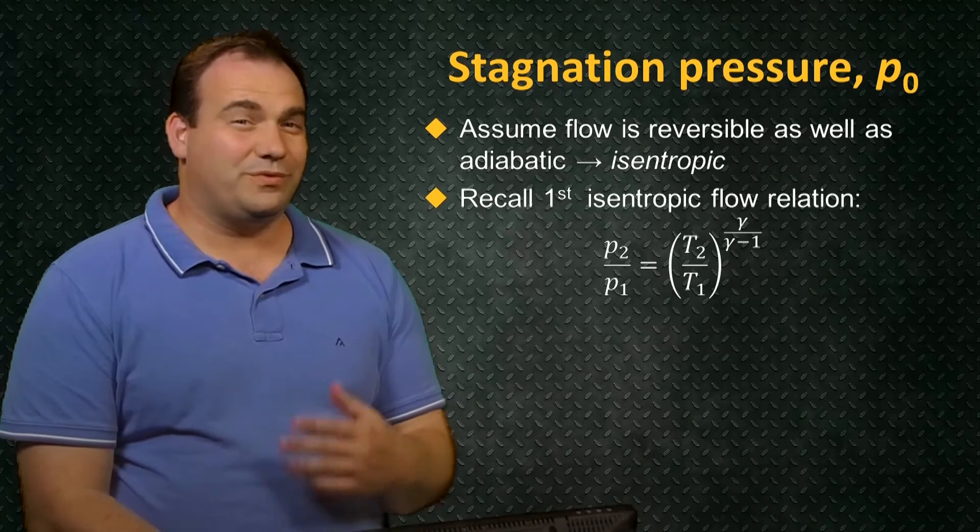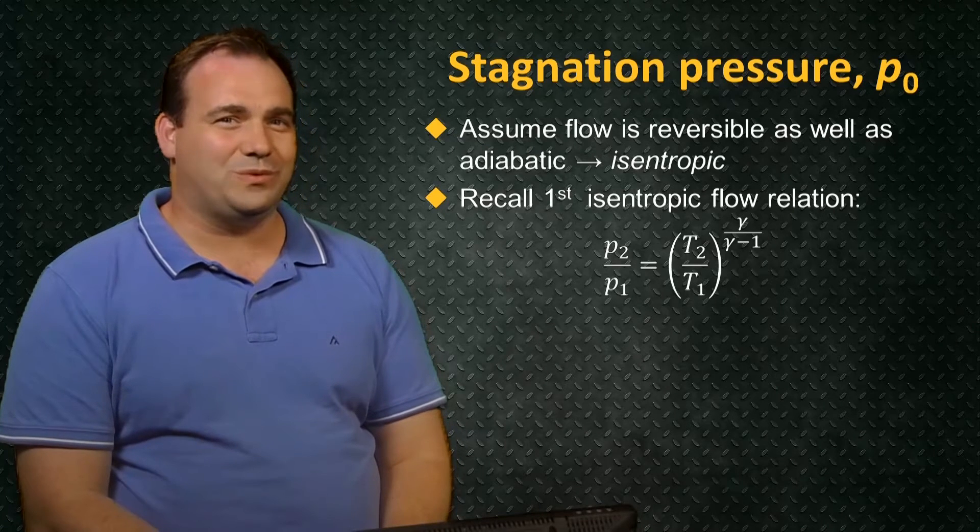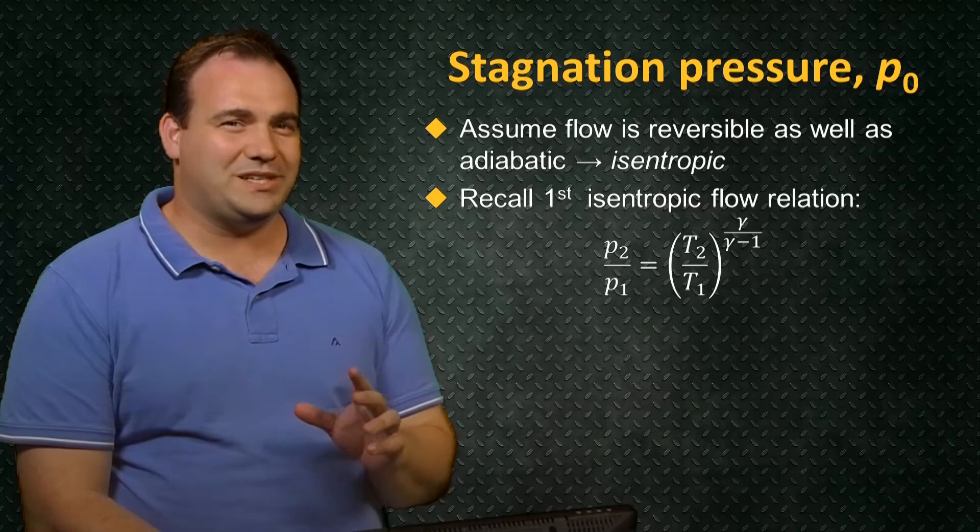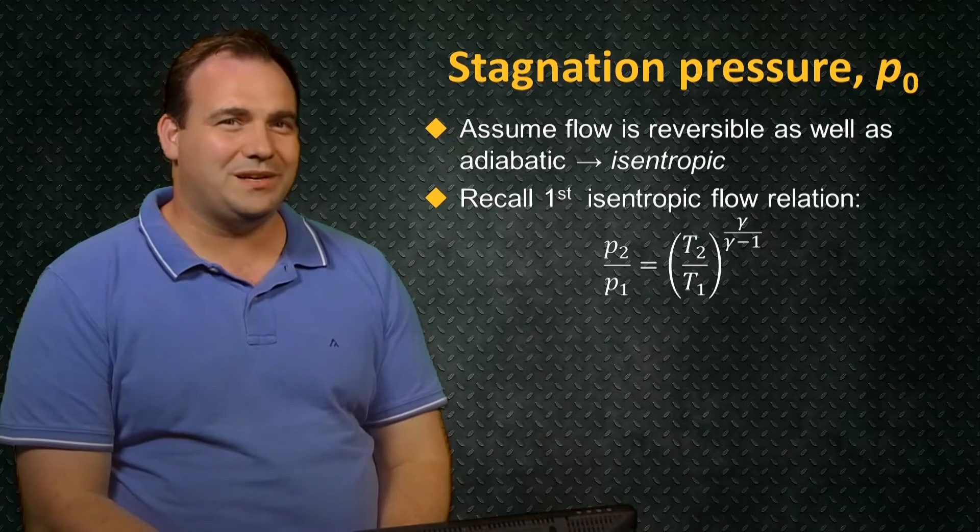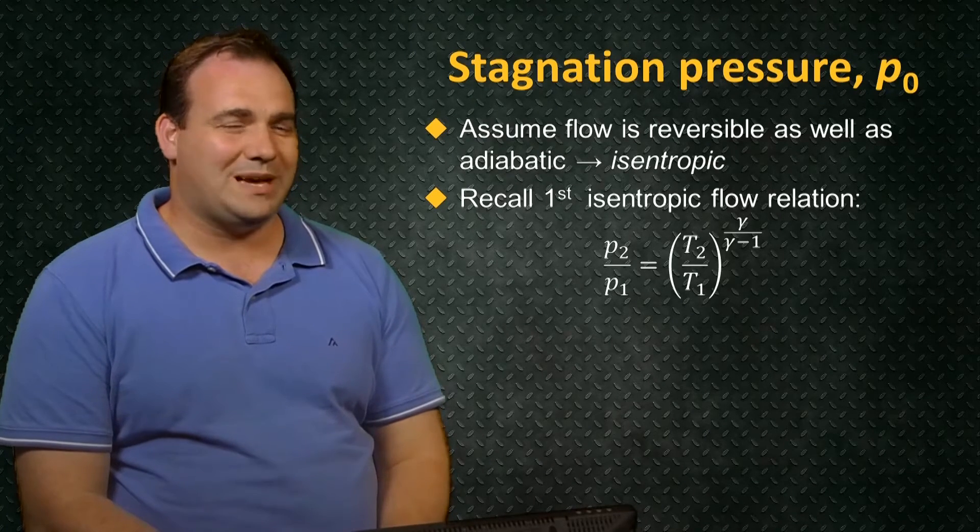If you recall, the first isentropic flow relation we derived was that the pressure ratio across an isentropic process was equal to the temperature ratio to the power of gamma over gamma minus 1.